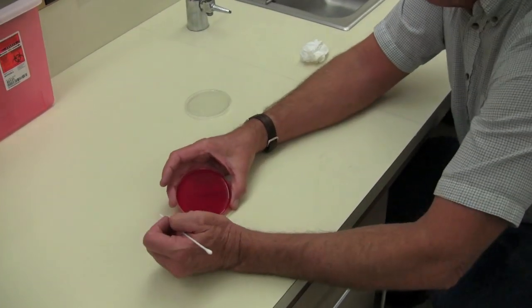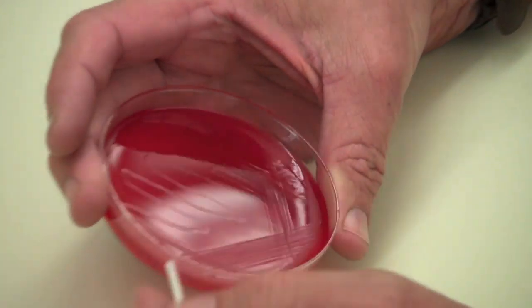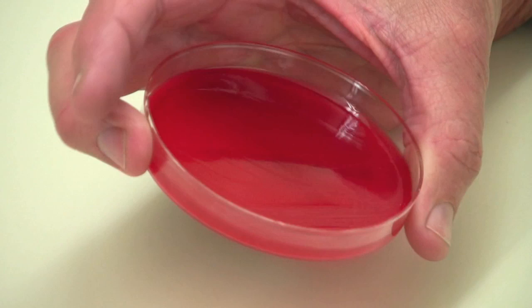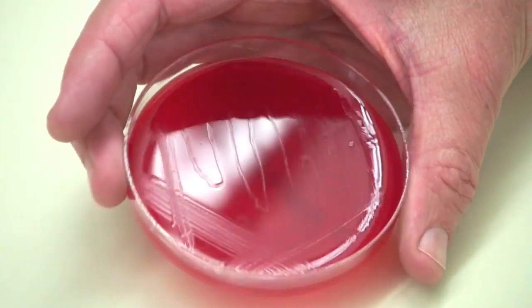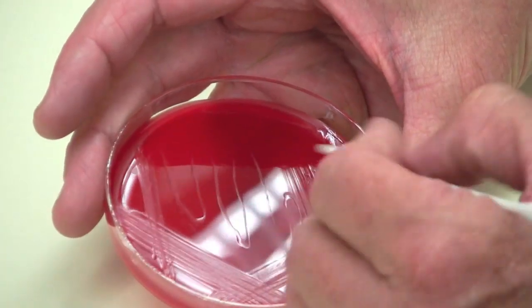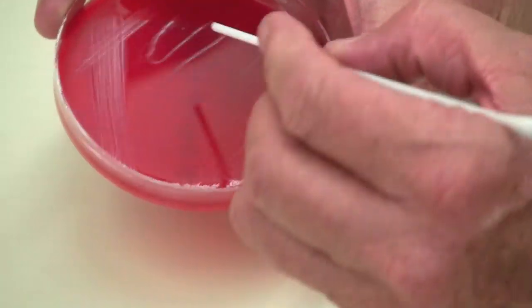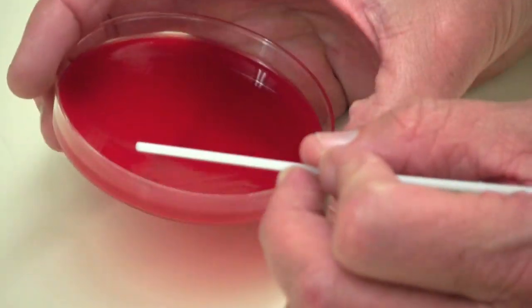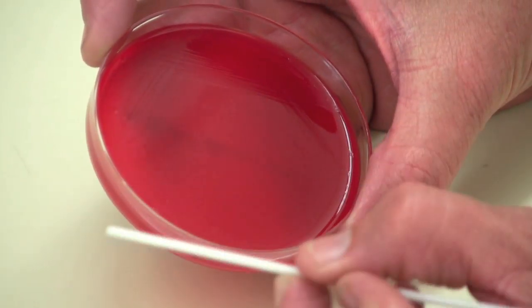The agar we're going to be using to do your streaking is called blood agar, and it is a soft agar. It's 1.5% agar added to this media and it gels the media, but it's kind of firm but yet it's kind of soft. So when you streak the plate, be careful not to dig too hard into the agar with your loop.